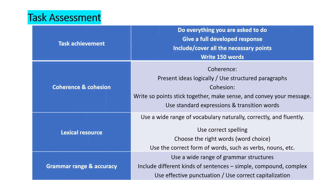Let's take a look at the task assessment. So 25% is for task achievement, which means that you need to answer everything that you're asked to do in the question. The other 25% is coherence and cohesion, in which you need to use structured paragraphs and standard expressions. The next 25% is lexical resource, in which you need to use a wide range of vocabulary. And the last is grammar range and accuracy, which is 25%, in which you need to use different kinds of sentences ranging from simple, compound, and complex.